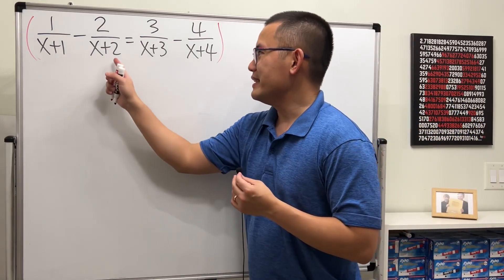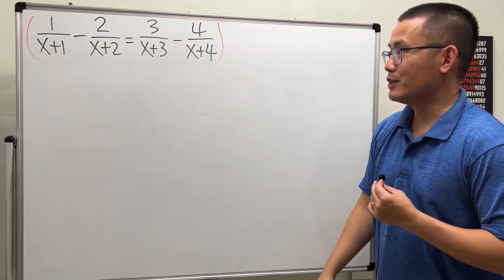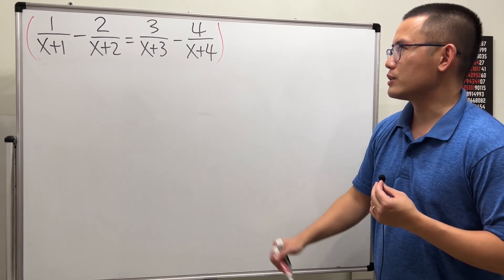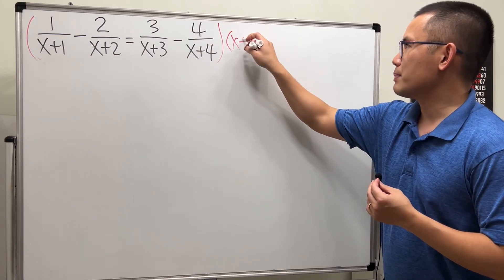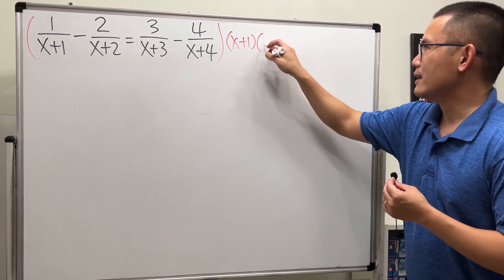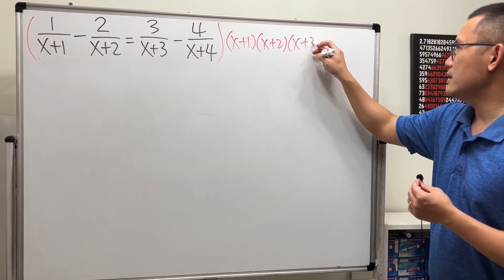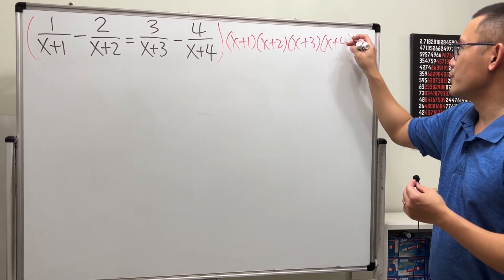However, all the denominators are different and there's no common factor. So we'll just multiply everybody by x plus 1, plus 2, and then plus 3, and then the plus 4 version.